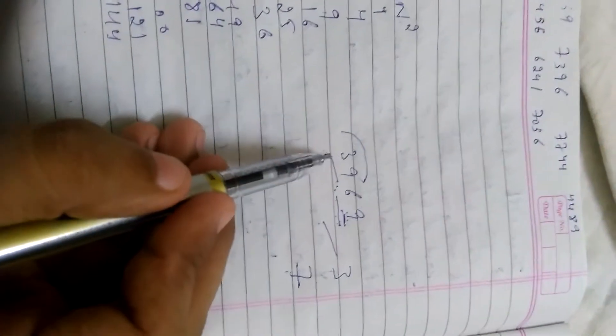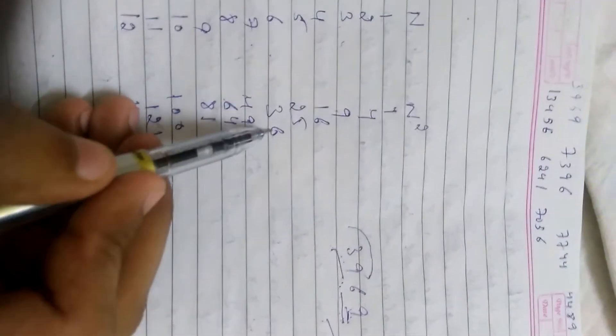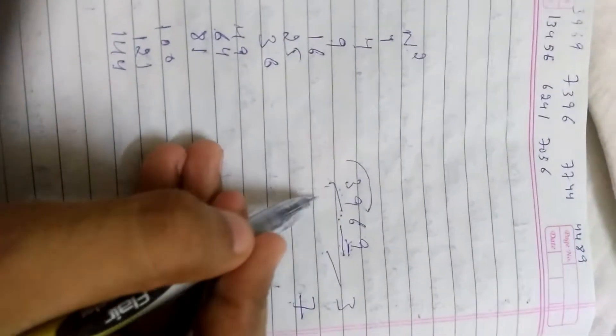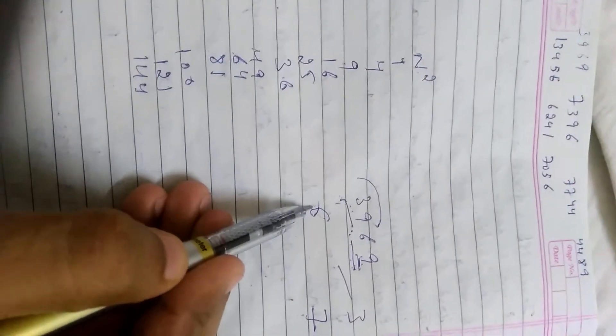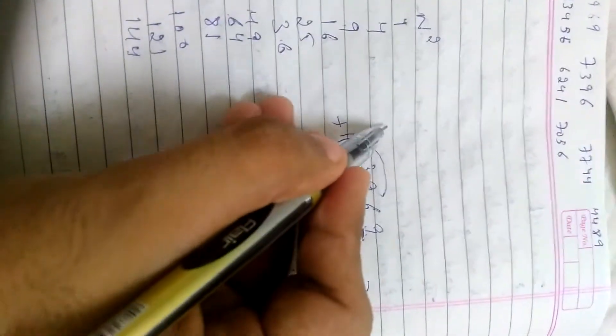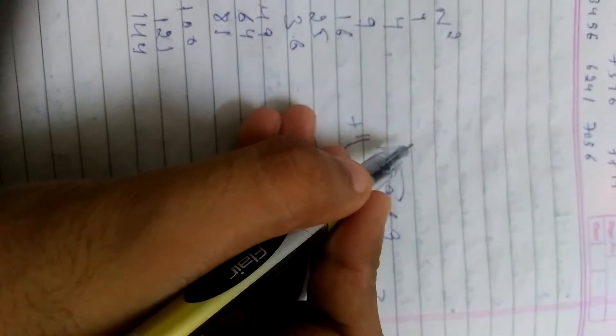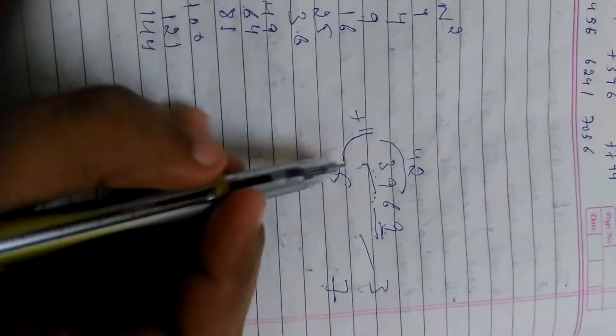Now we consider the number that is less than 39. 39 lies between 36 and 49, so we take 6. 6 square is 36, that's why we take 6. Then plus 1, 6 plus 1 is 7. 6 into 7 is 42, so we write 42.